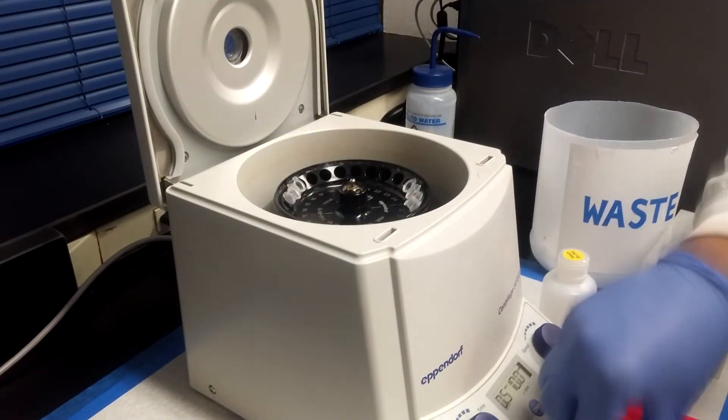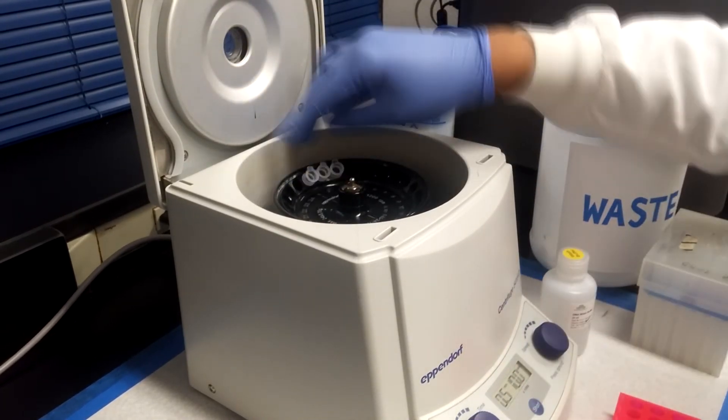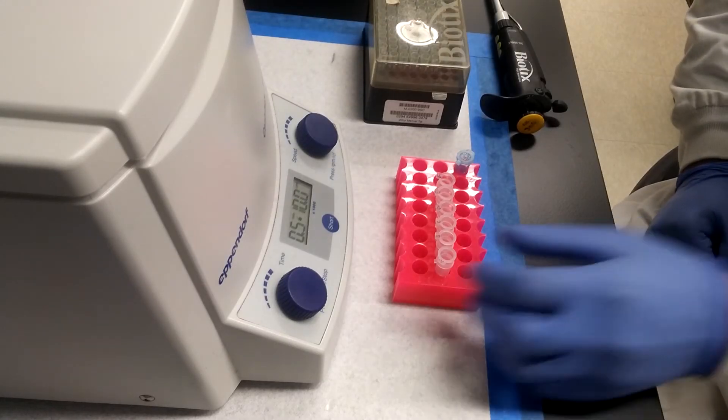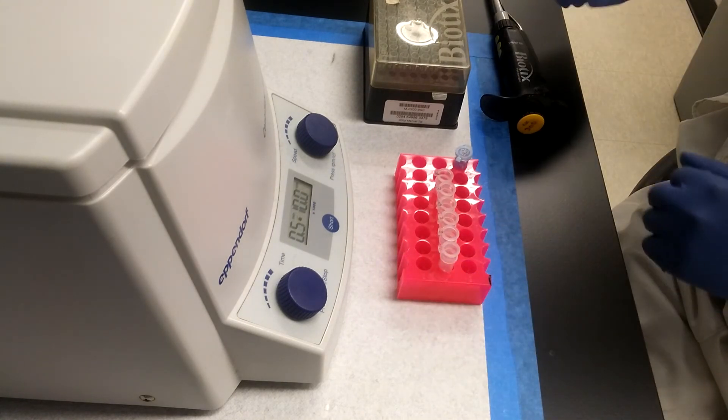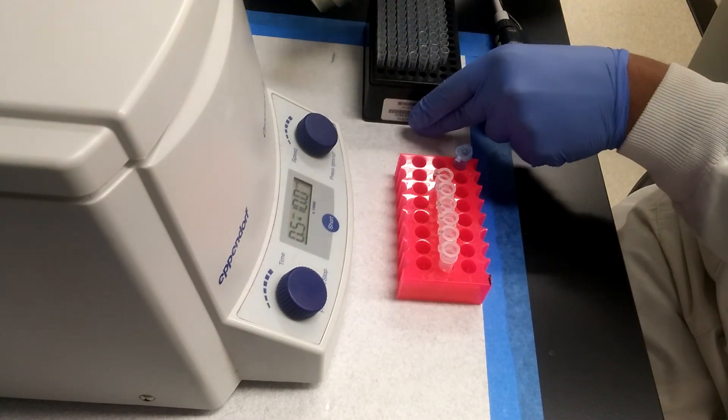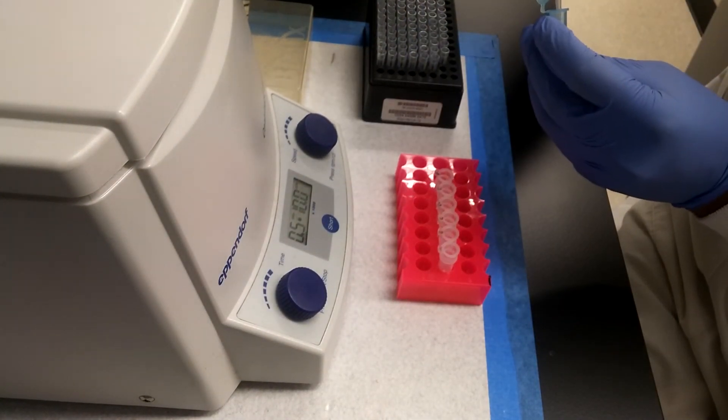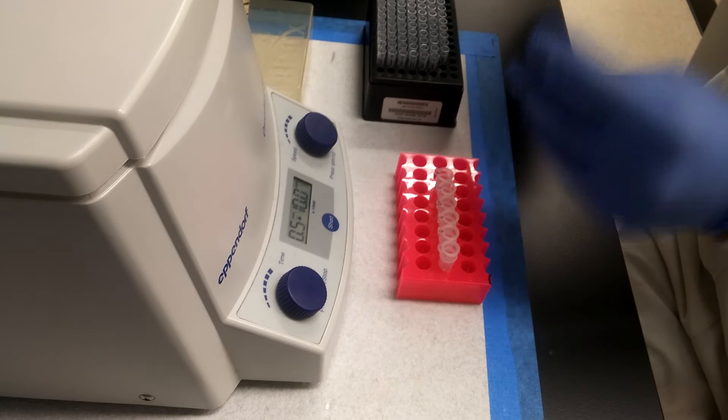After centrifuging, the collection columns can be discarded along with any buffer present in them. The filtration columns are then placed inside corresponding tubes PDNA A through F. 50 microliters of ultra-pure water are added to each column, pipetting as close to, but not touching, the filter.